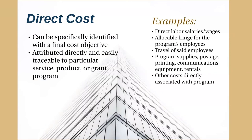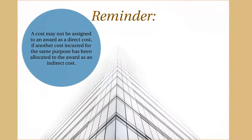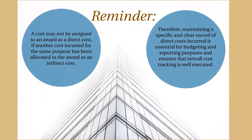Costs that are directly associated with a specific grant or contract may include direct labor salaries and wages and allocable fringe for program employees, travel of said employees and their program supplies, and postage, printing, communications, equipment, rentals, and other costs directly associated with the program. A cost may be assigned to an award as a direct cost if another cost incurred for the same purpose in a similar circumstance has been allocated to the award as an indirect cost. Therefore, maintaining a specific and clear record of all direct costs incurred is essential for budgeting and reporting purposes and ensures that overall cost tracking is well executed.